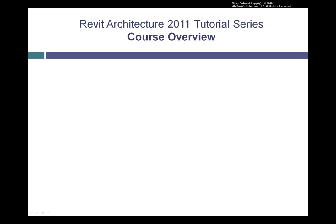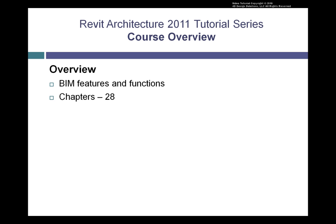In this tutorial series, you will learn about the Building Information Modeling features and functions of Revit Architecture 2011. We've divided the course into 28 logical chapters that you can take in sequence, with a total of 420 lessons. You can also search to find individual lessons on specific topics you're interested in.